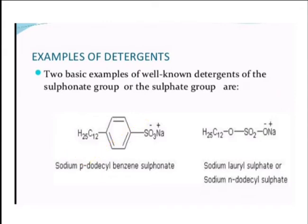Two basic examples of detergents containing sulfonate or sulfate groups are: first, sodium para-dodecyl benzene sulfonate — you may have used this in chemistry practicals to find critical micelle concentration — and second, sodium lauryl sulfate, also known as sodium dodecyl sulfate.